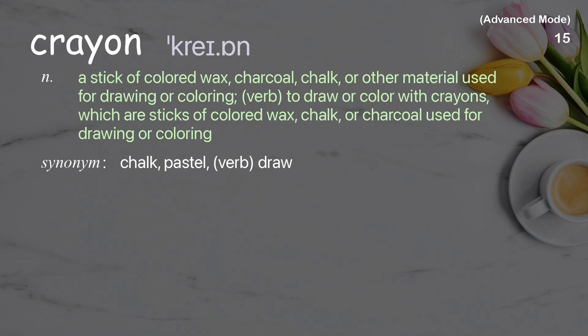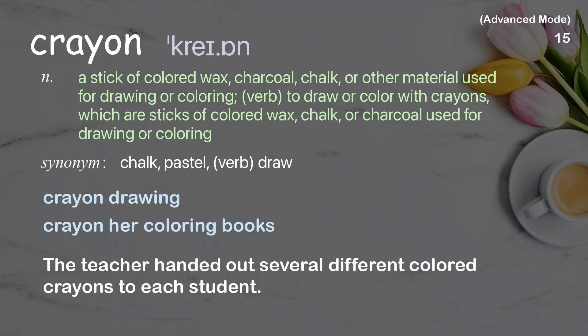Crayon: a stick of colored wax, charcoal, chalk, or other material used for drawing or coloring. Verb: to draw or color with crayons. Examples: crayon drawing; crayon her coloring books. The teacher handed out several different colored crayons to each student.